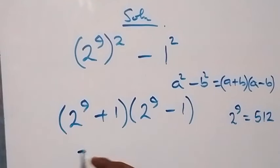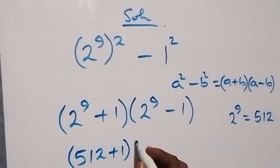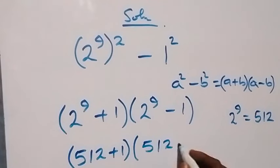Then, that means here we have 512 plus 1. Then, into bracket, also here we have 512 minus 1.